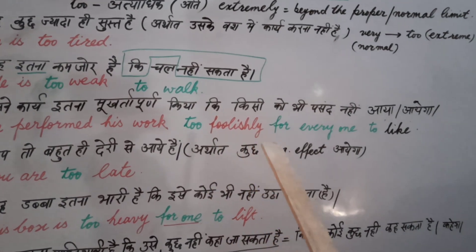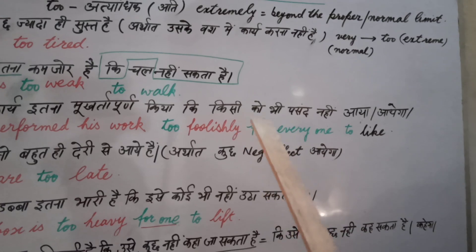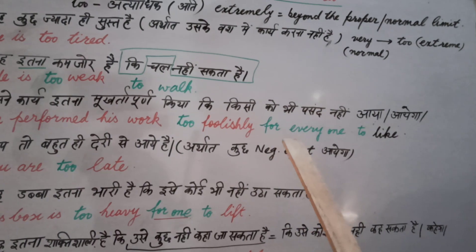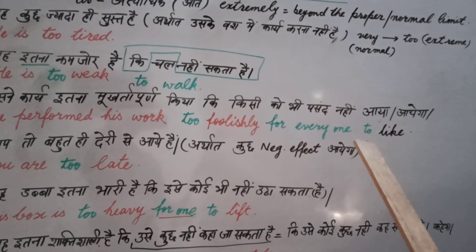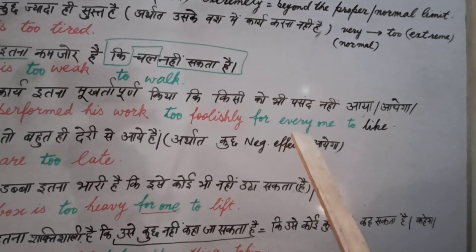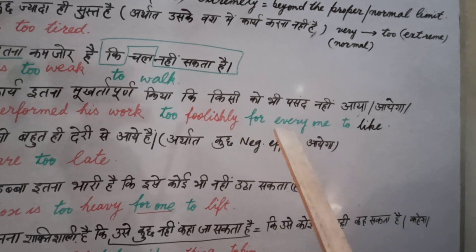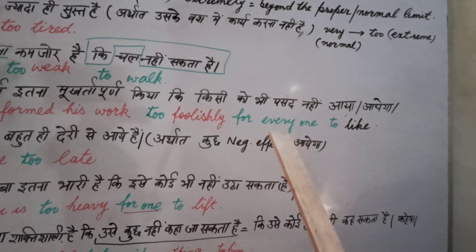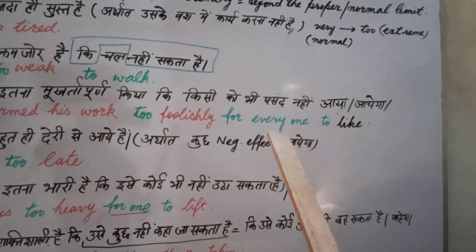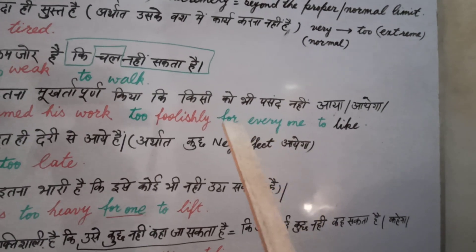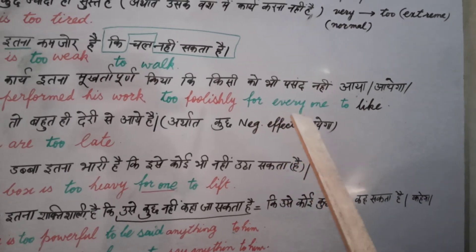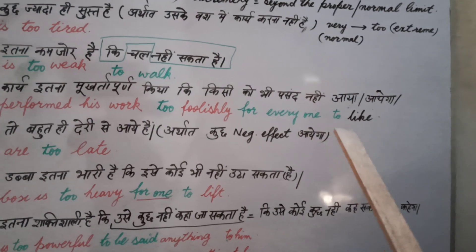Foolishly is also an adverb. Now, you can see the subject of the first part and the subject of the second part are different. So we will have to write the second subject after 'for.' And when we use 'for,' we use the pronoun as an object. For example, if there is 'I,' we write 'me' because 'for' is a preposition, and after a preposition we use only the objective form. 'For everyone to like.'